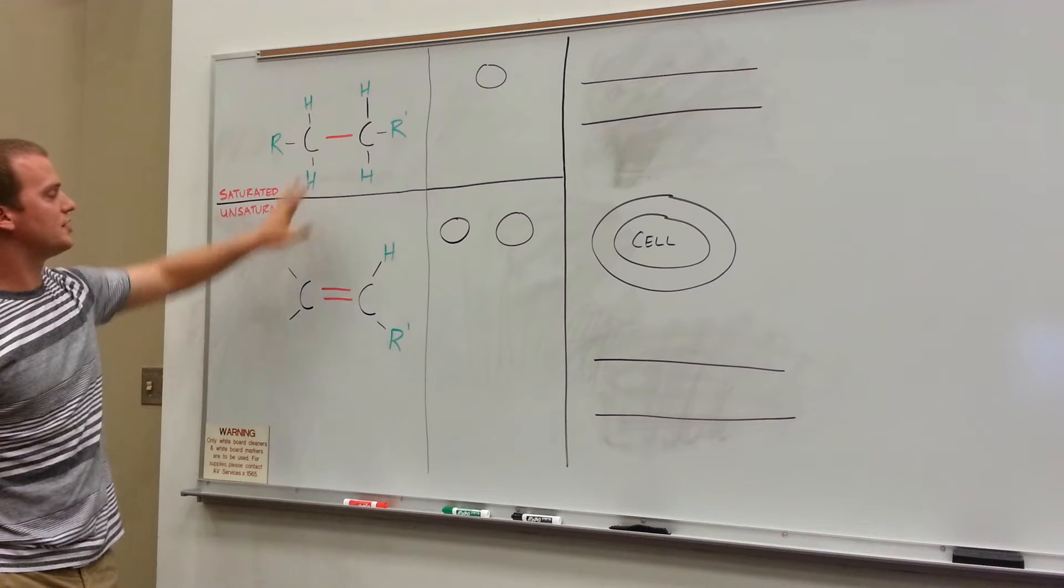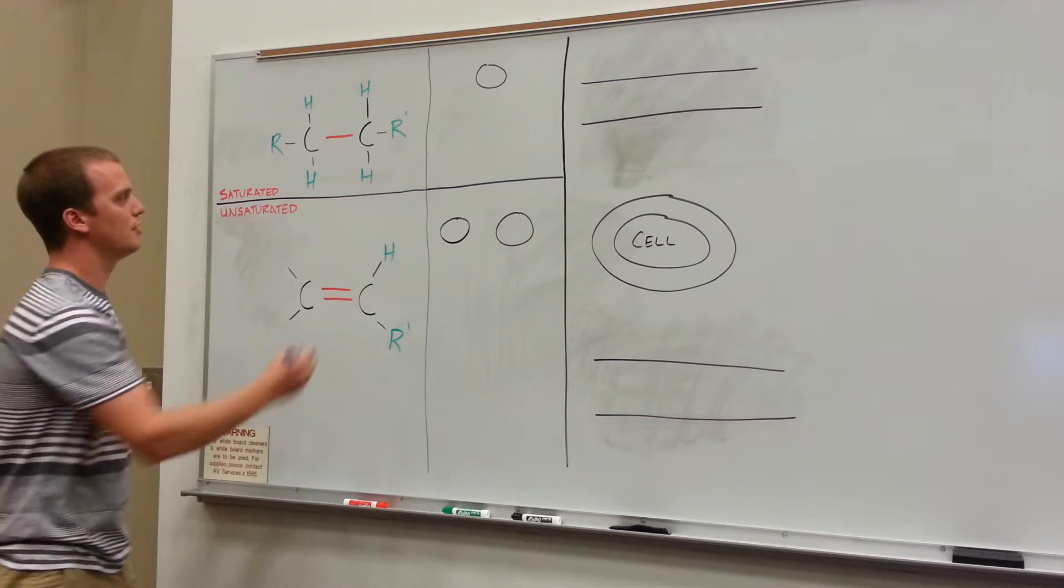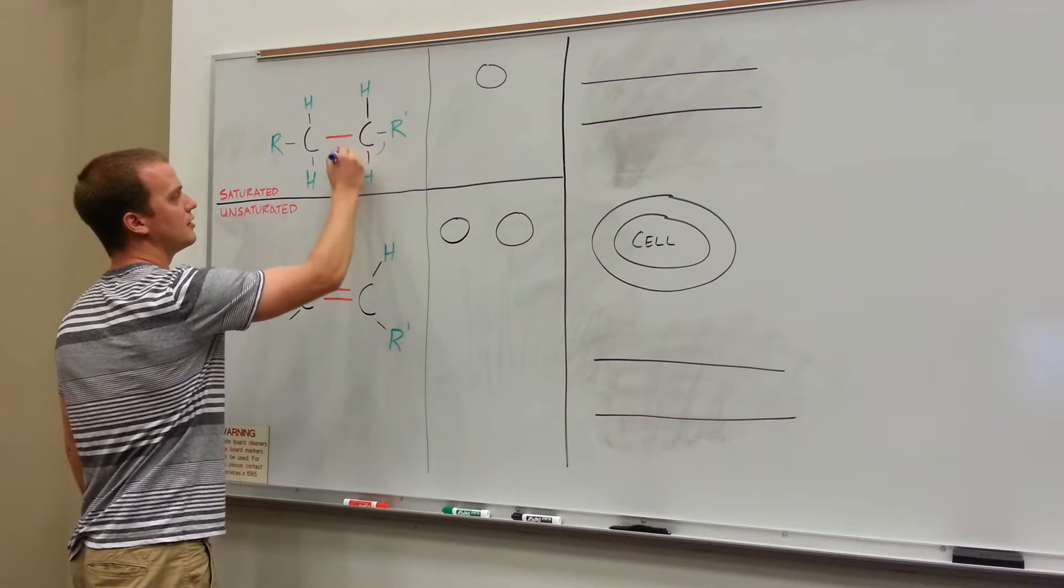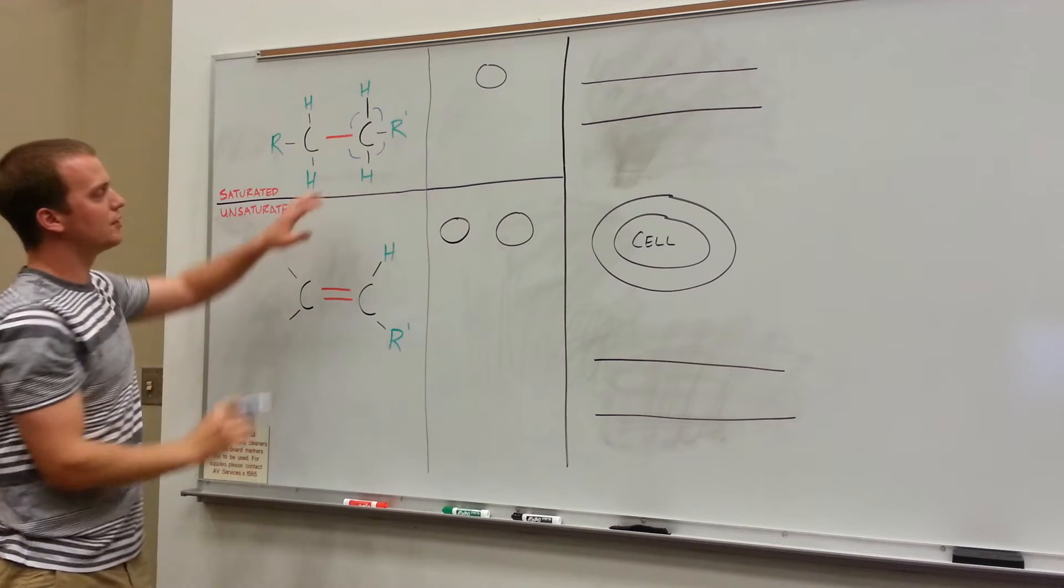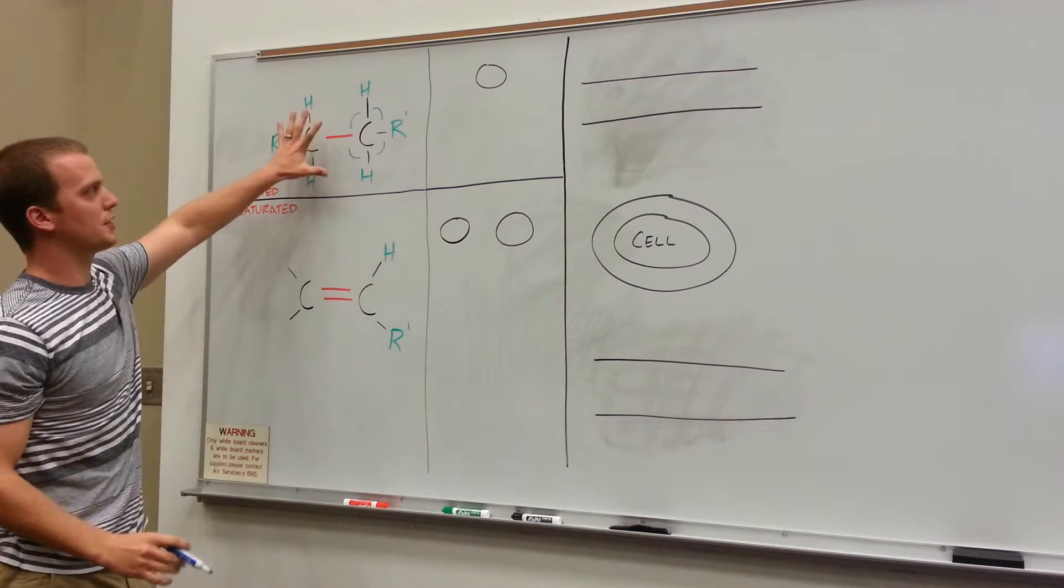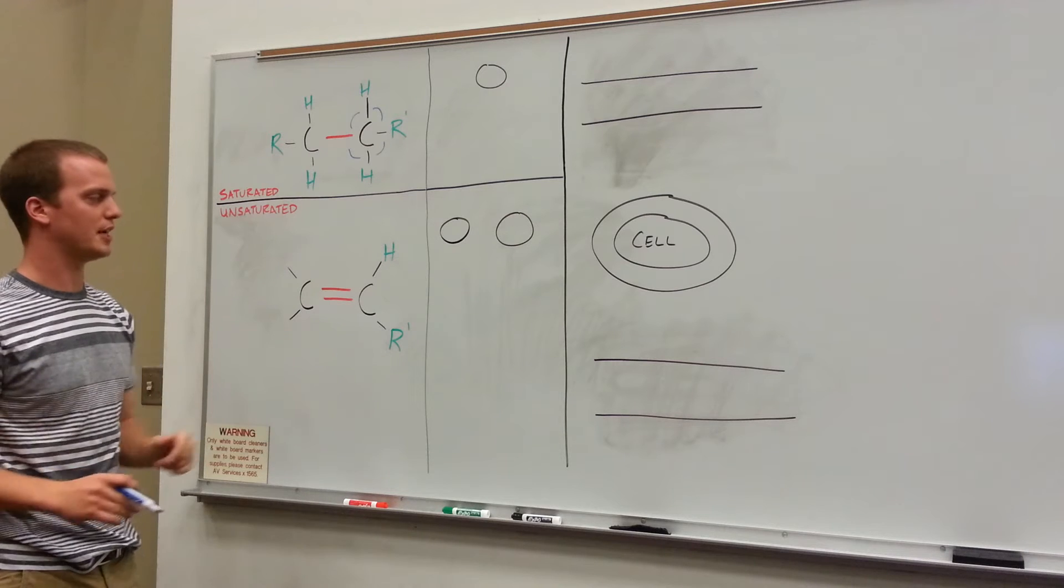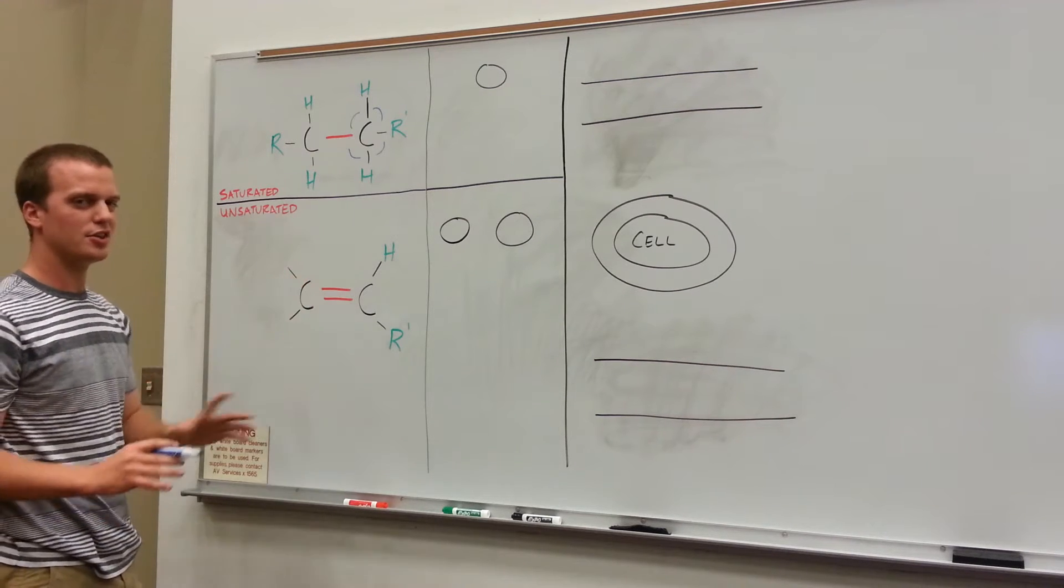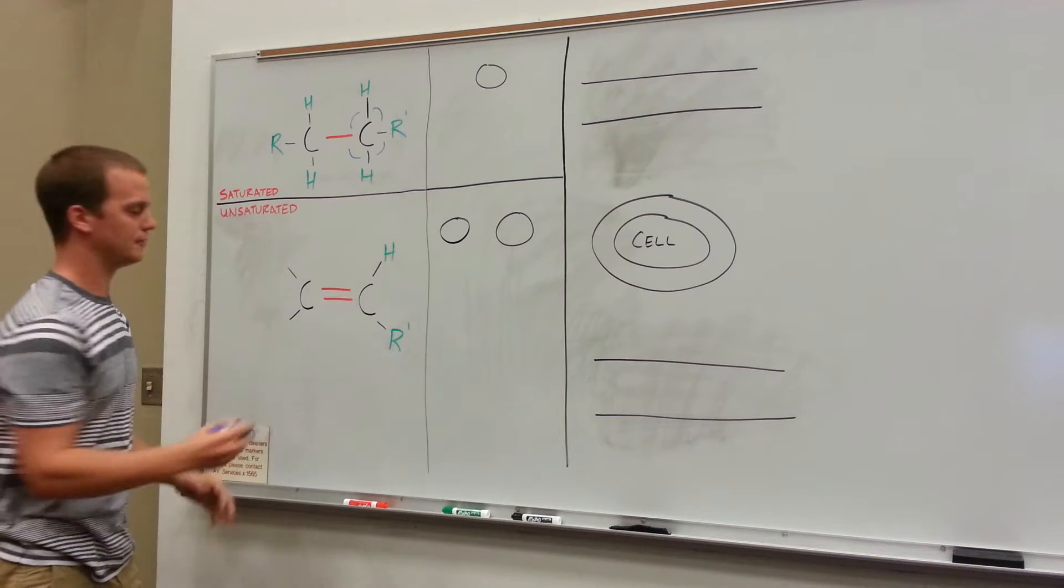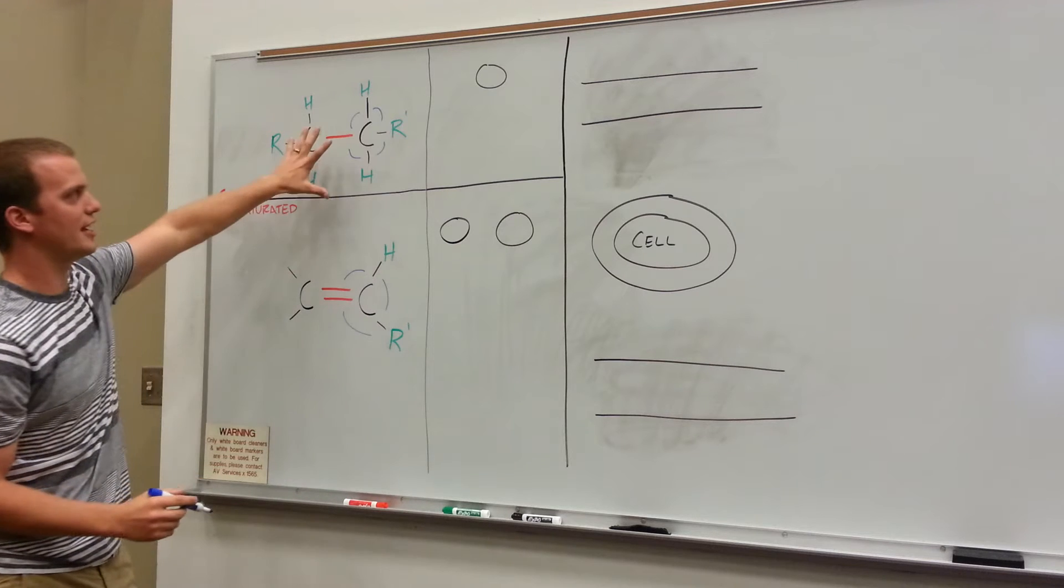Now you'll notice up here with the saturated bond that these atoms, in our picture as well as in real life, are equally spaced. Each one of these angles here is about 90 degrees. These atoms want to stay apart from each other. All these connections, all these green letters want to stay apart from each other as much as possible. You'll notice that that's the same case down here with the double bond. Even though there aren't as many connections, they're still as far apart as possible. So these degrees here are going to be about 120 versus the 90.